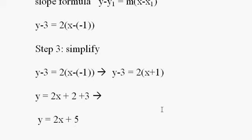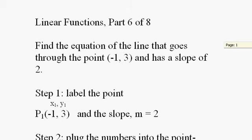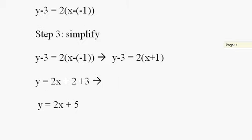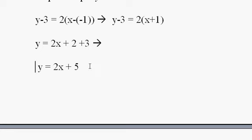And that's the equation of the line that goes through the point negative 1 and 3 and has a slope of 2. Here it is right here. It goes to the point negative 1 and 3 and has a slope of 2.